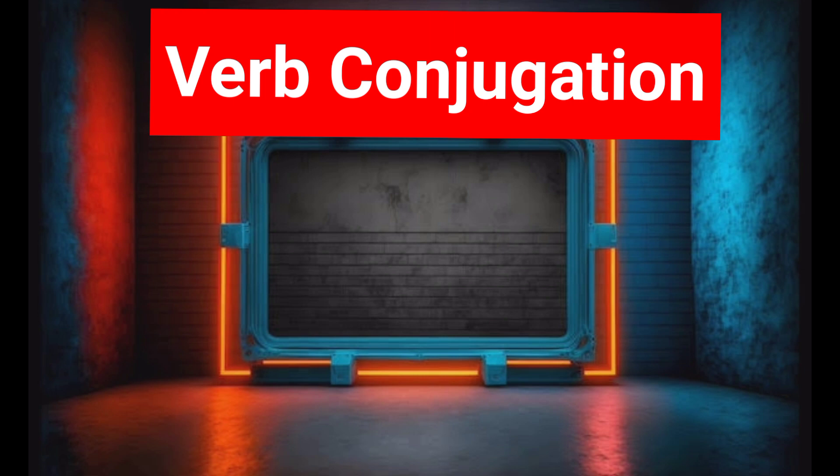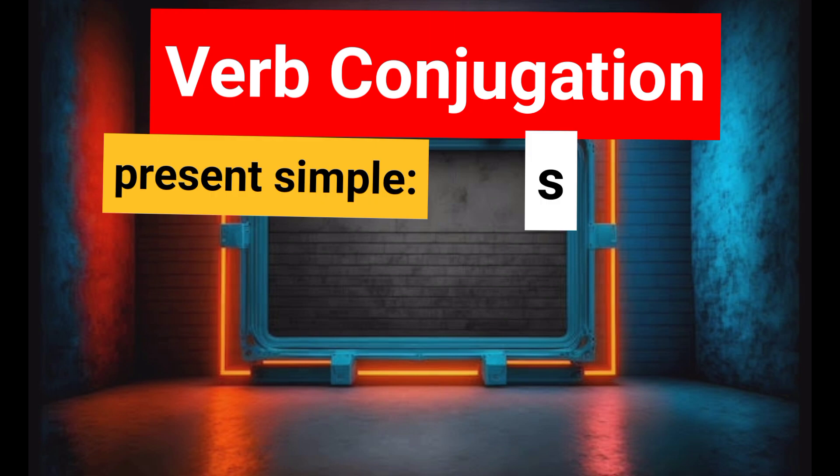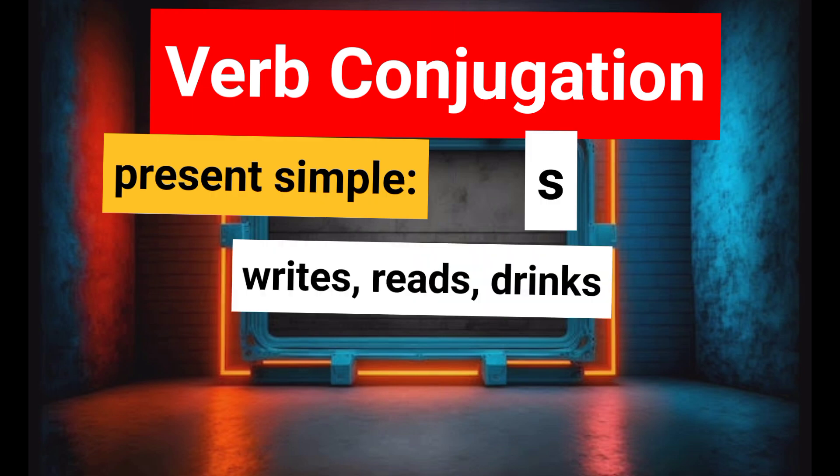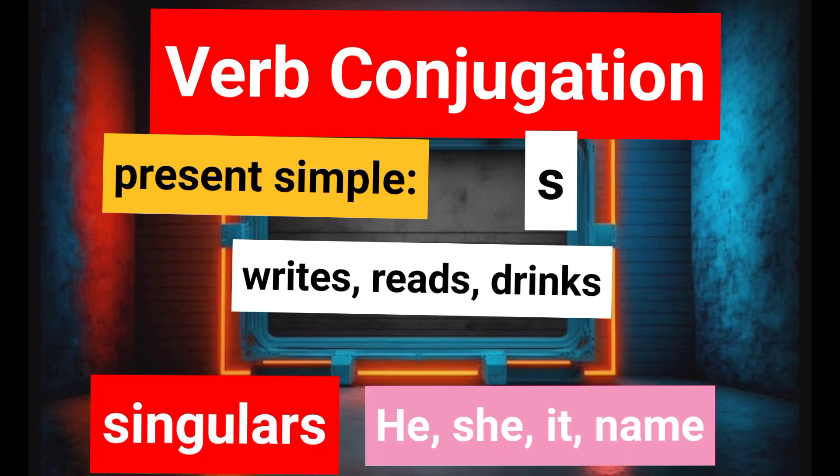Verb conjugation is crucial. For example, in present simple, we add 's' to the base form for the third person singular.